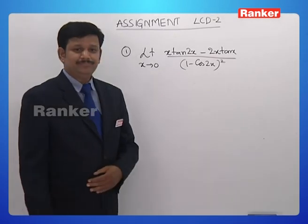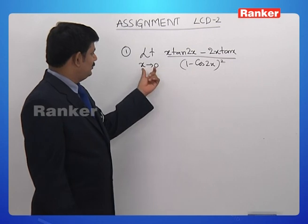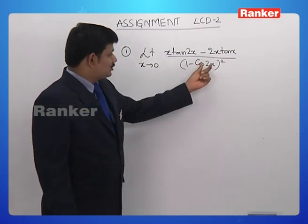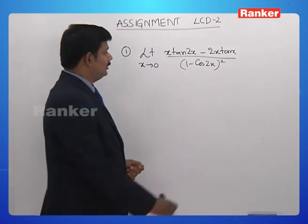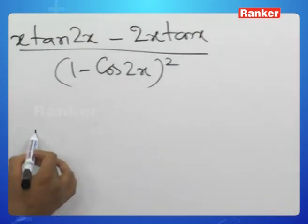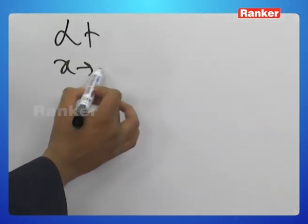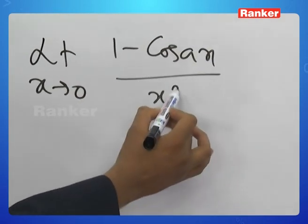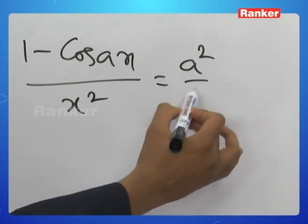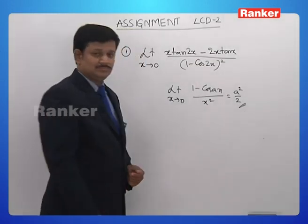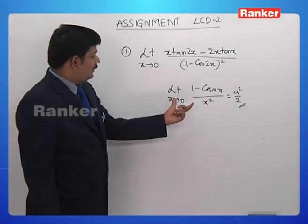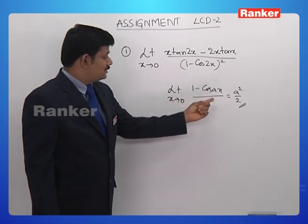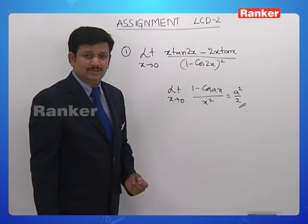When you look at this question, you can see a standard limit: limit extending to 0 of 1 minus cos(ax) divided by x square. We all know through discussion that limit extending to 0 of 1 minus cos(ax) by x square is a square by 2.